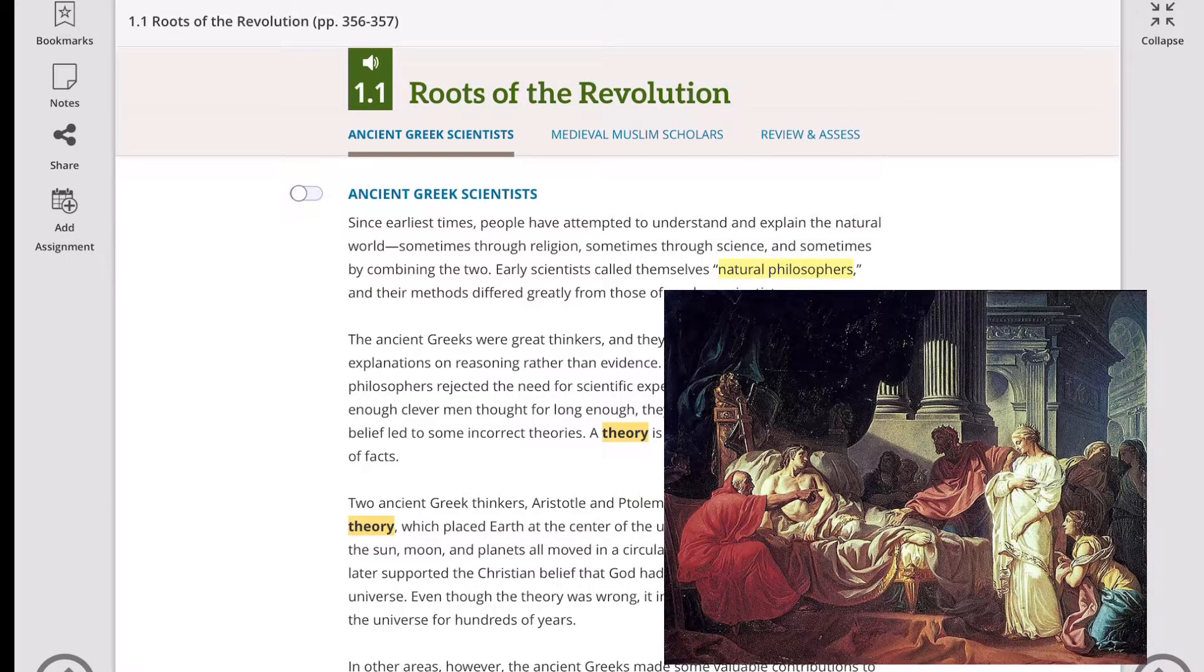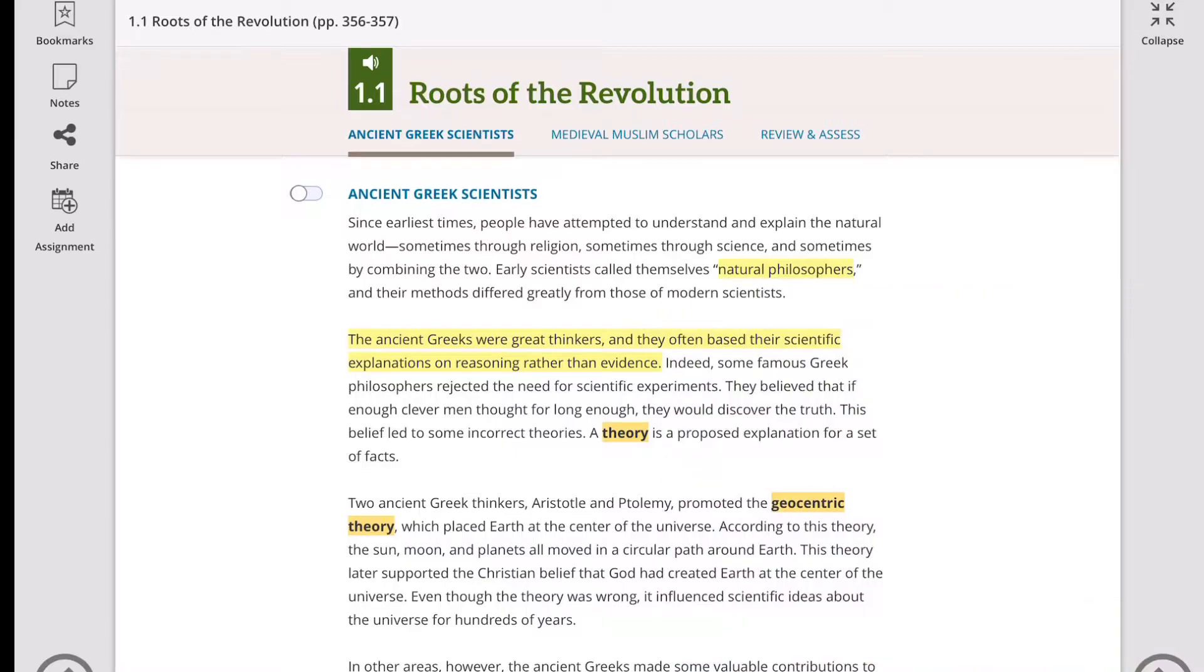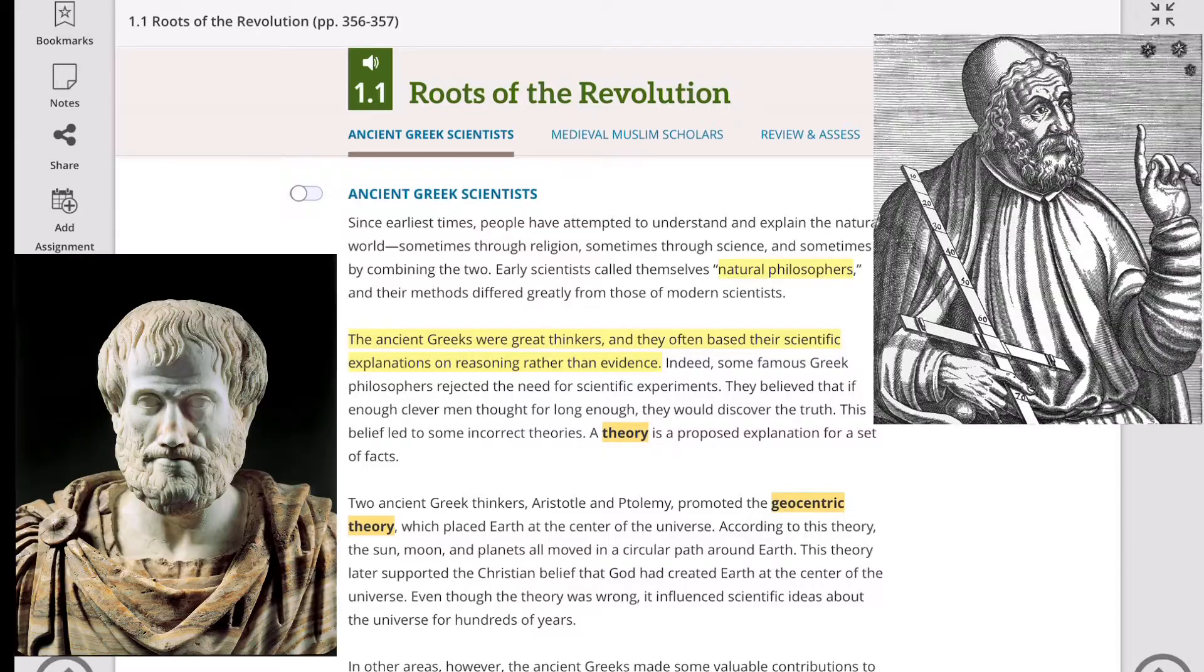The ancient Greeks were great thinkers, and they often based their scientific explanations on reasoning rather than evidence. Indeed, some famous Greek philosophers rejected the need for scientific experiments. They believed that if there are enough clever people thinking the same way, they would discover the truth. This belief led to some incorrect theories. Well, what is a theory? A theory is a proposed explanation for a set of facts.